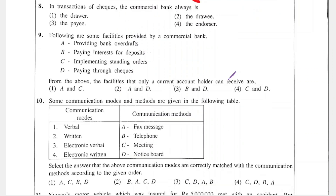Question 8: In the transaction of cheques, the commercial bank always is the drawer, drawee, payee, or endorser? The bank is always the drawee — it receives instructions from the current account holder or drawer to make the payment to the payee. So the drawee is always the bank. The answer is 2.